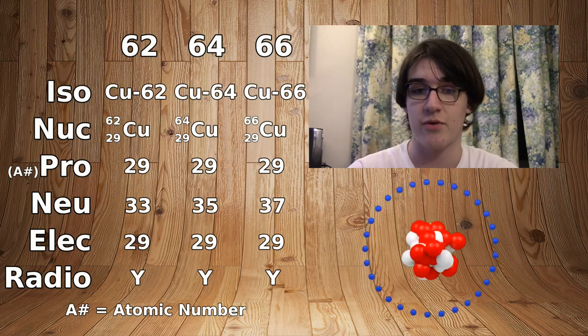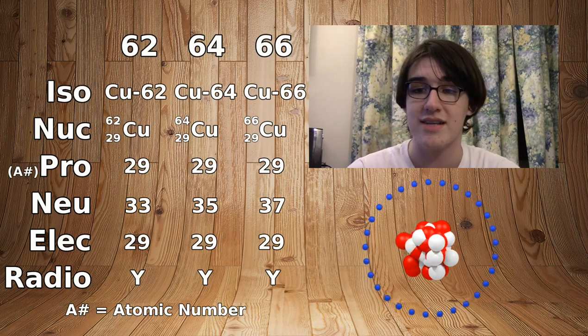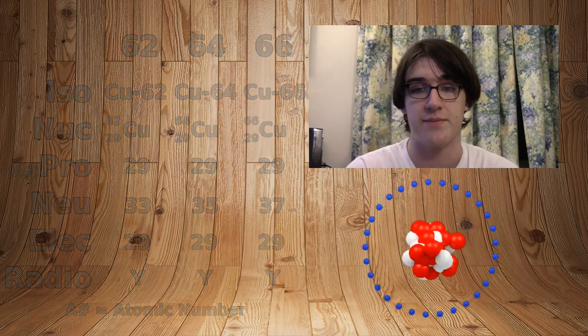Copper 62, copper 64, and copper 66 are all unstable and radioactive isotopes. Copper 63, on the other hand, is stable and occurs 70% of the time on Earth.